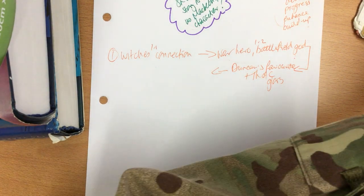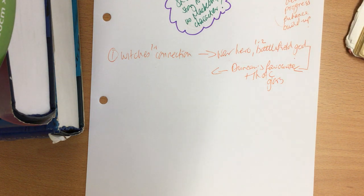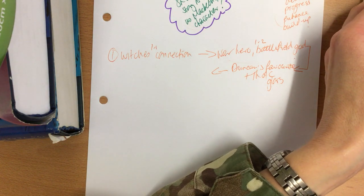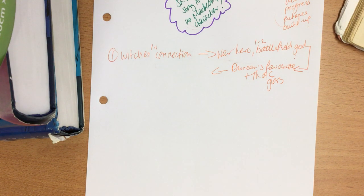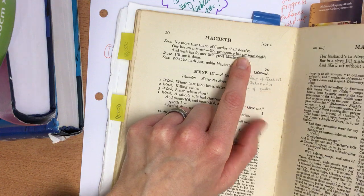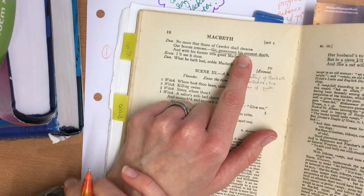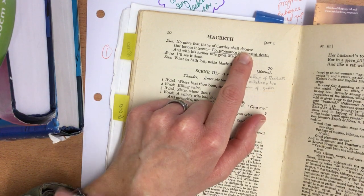Possibly looking at one of the last things Duncan says — the bit about absolute trust. 'No more that Thane of Cawdor shall deceive our bosom interest.' Oh, the irony. Deceive — what does to deceive mean? If you haven't circled that, can you circle it now? 'No more shall that Thane of Cawdor deceive our bosom interest.' Who is the next Thane of Cawdor? It's Macbeth. Is he going to do the same thing? Can you find me the line where he is beginning to be deceptive — that germination is developing?